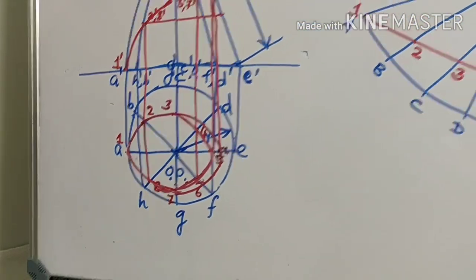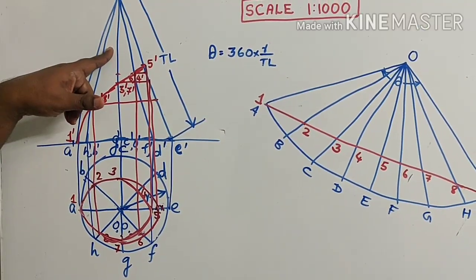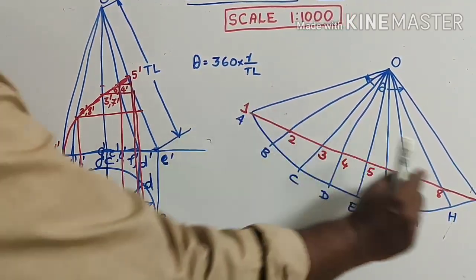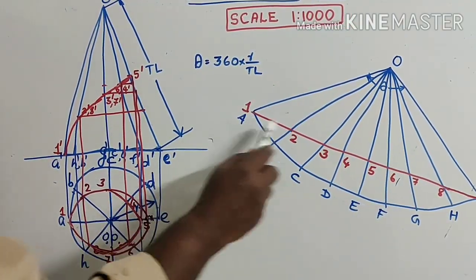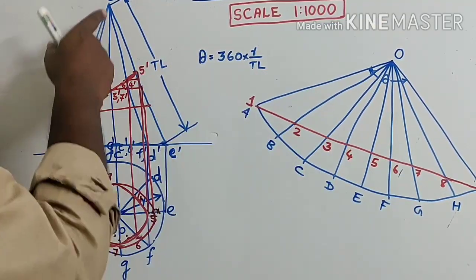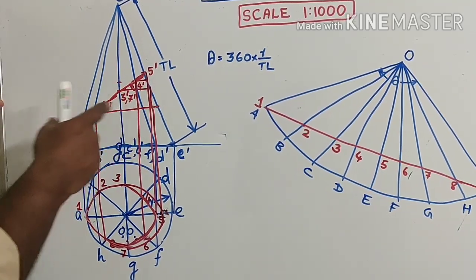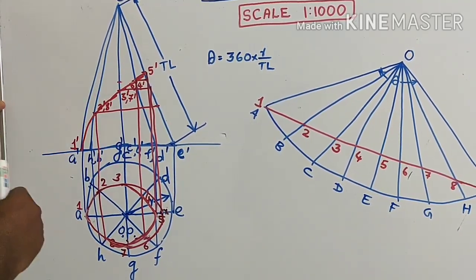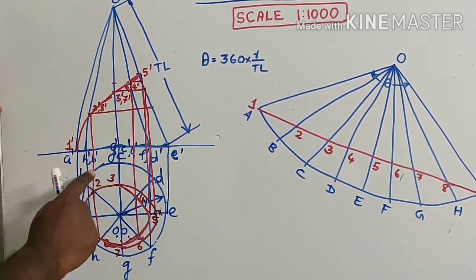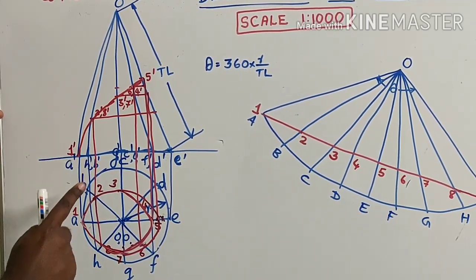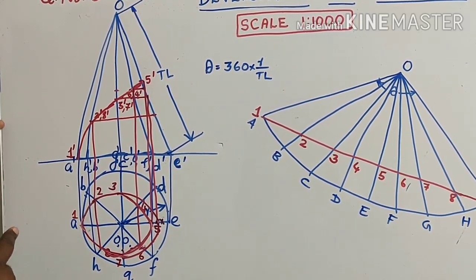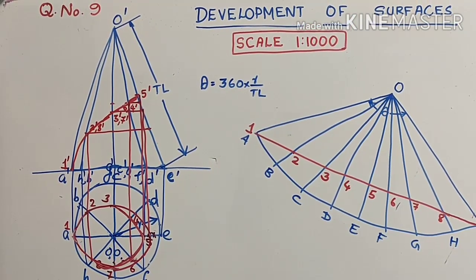To summarize what we have drawn: first the top view, then the front view, then the development based on the calculation of theta. We took the shortest path of the elephant as a straight line from A to A, measured distances to the true length line, transferred them to corresponding points in the front view, drew projectors to get the closed curve in the top view — which is the shortest path of the elephant. We can practice this. Thank you.